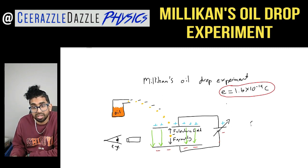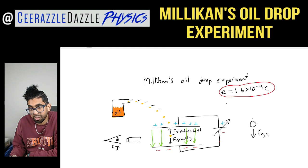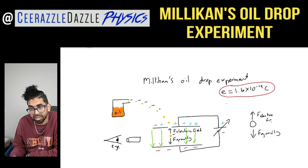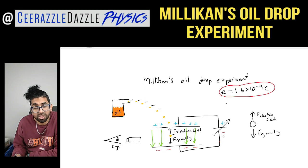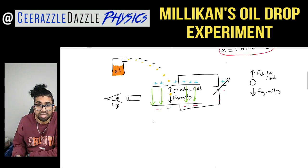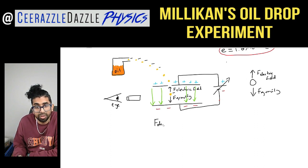Now let's talk about the forces. There's a force downwards due to gravity and at the top we have the force due to the electric field going up. Let's do a bit of maths to work out an expression for the charge on the oil drop. At the equilibrium point when it's hovering, the force due to the electric field is equal to the force due to gravity.